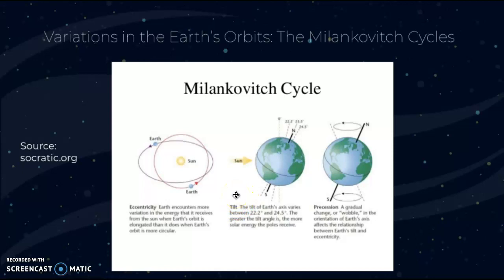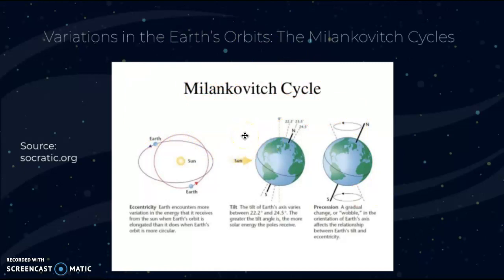Axial tilt is when the tilt of the Earth's axis varies between 22.2 degrees and 24.5 degrees. The greater the tilt angle, the more solar energy the poles will receive. Then we have precession, which is a gradual change or wobble in the orientation of the Earth's axis. This affects the relationship between the Earth's tilt and eccentricity, so all three factors interrelate and create their own types of impacts — which is why they're all put into one cycle.